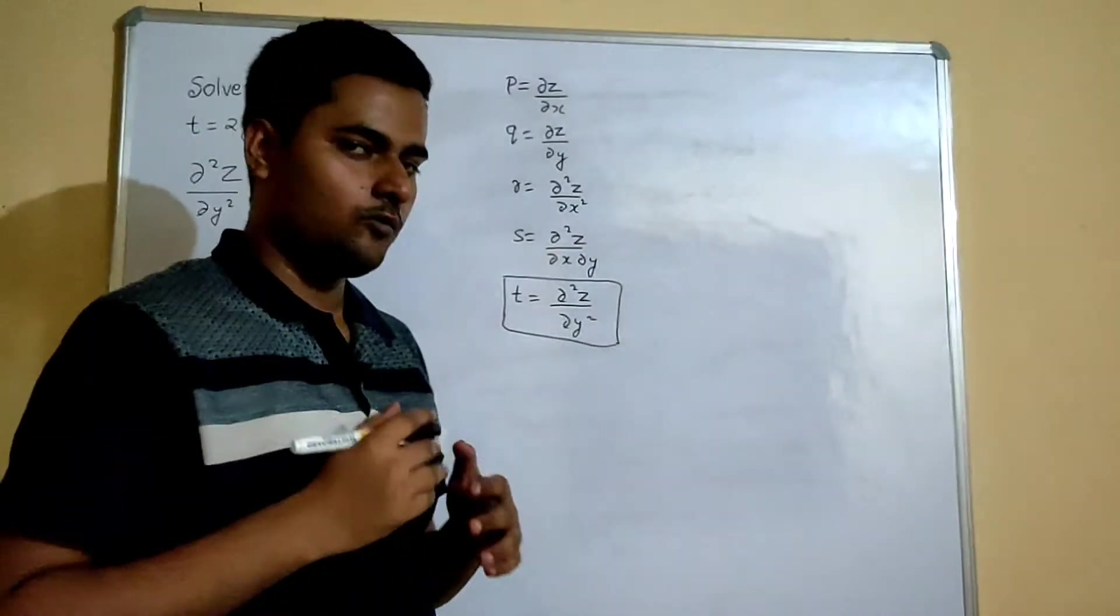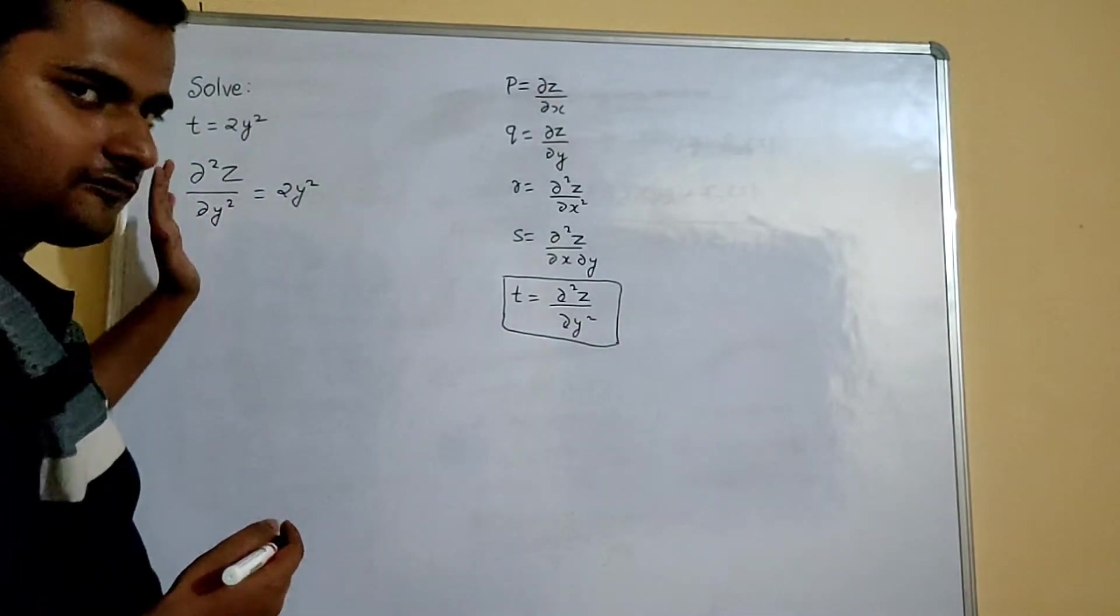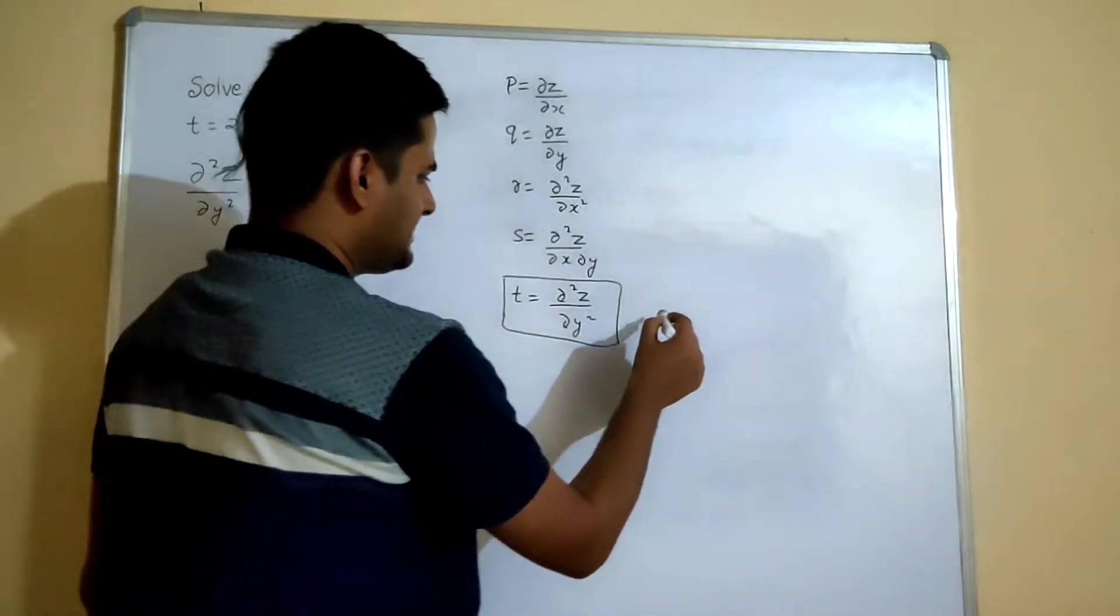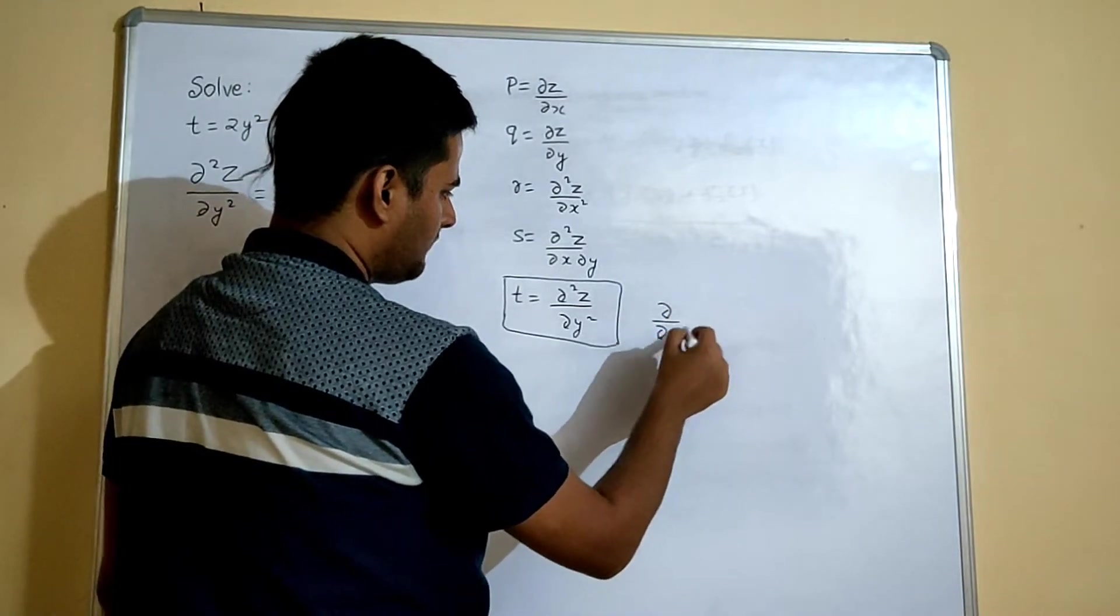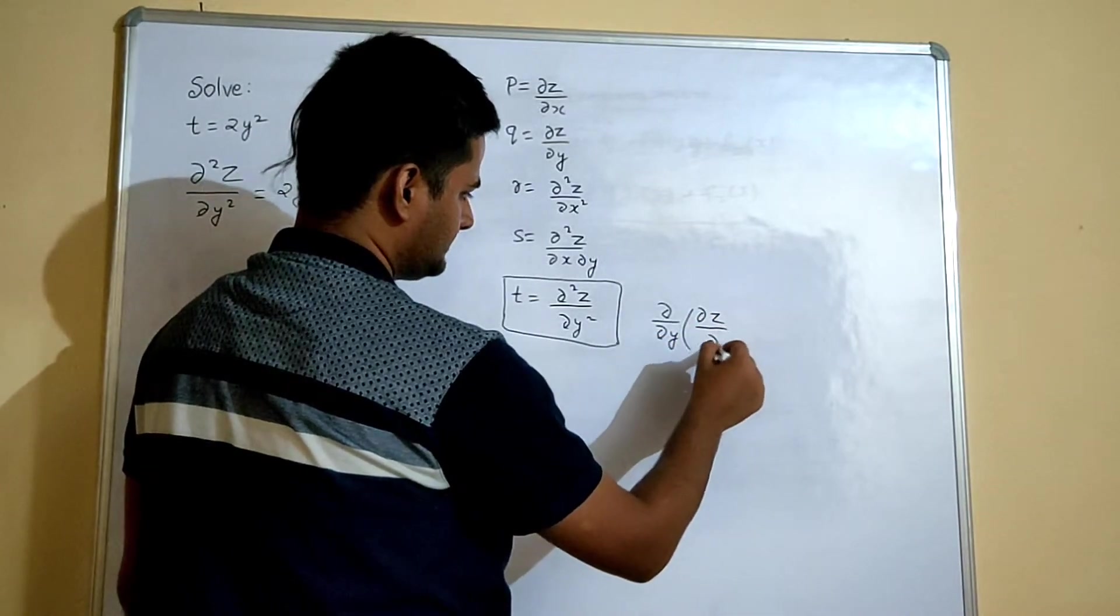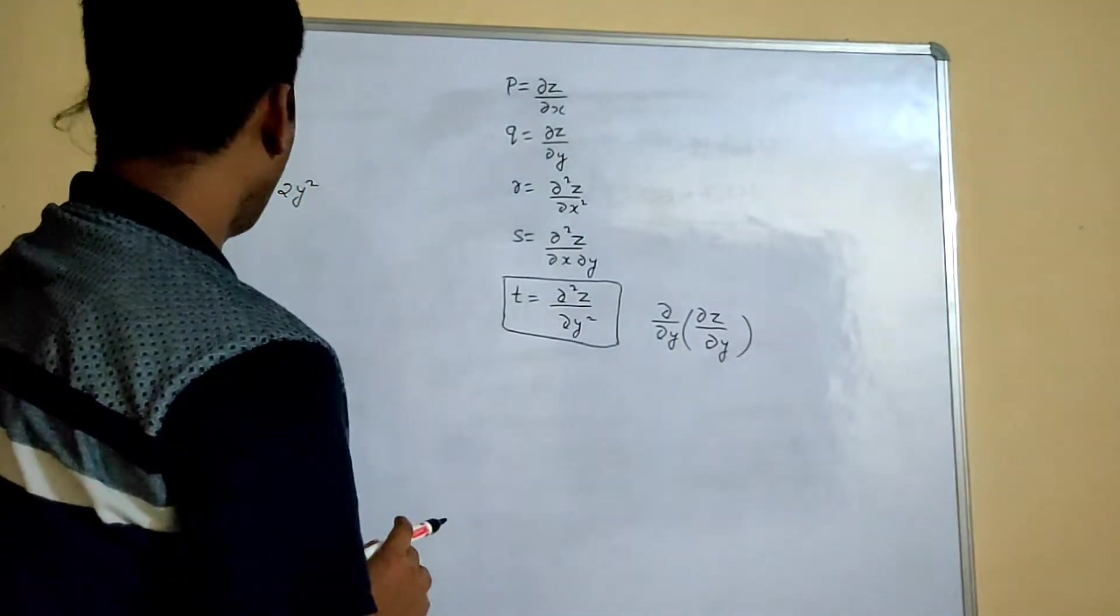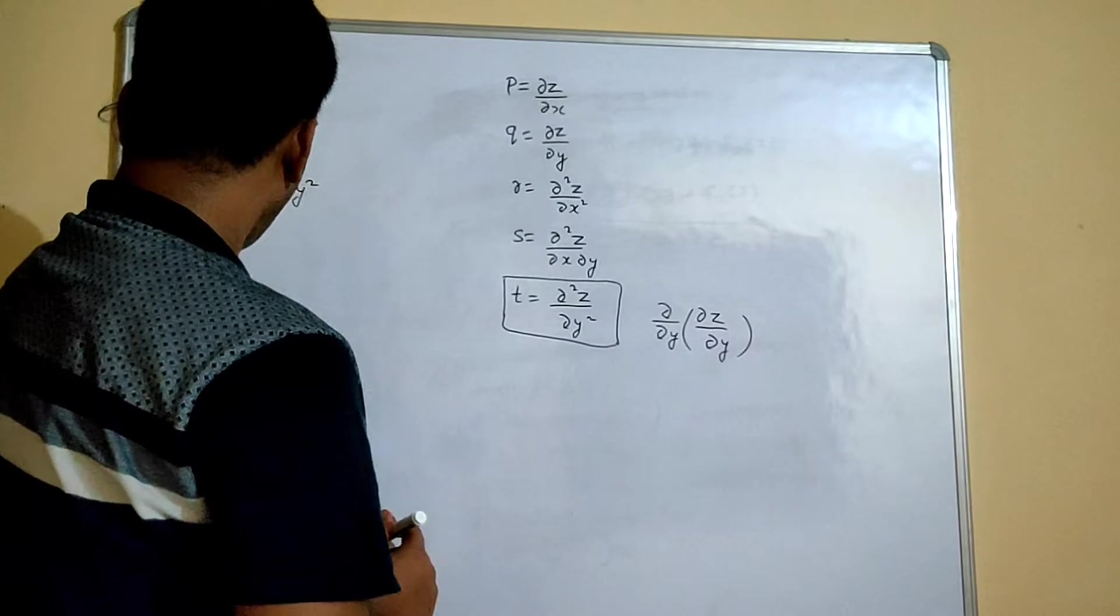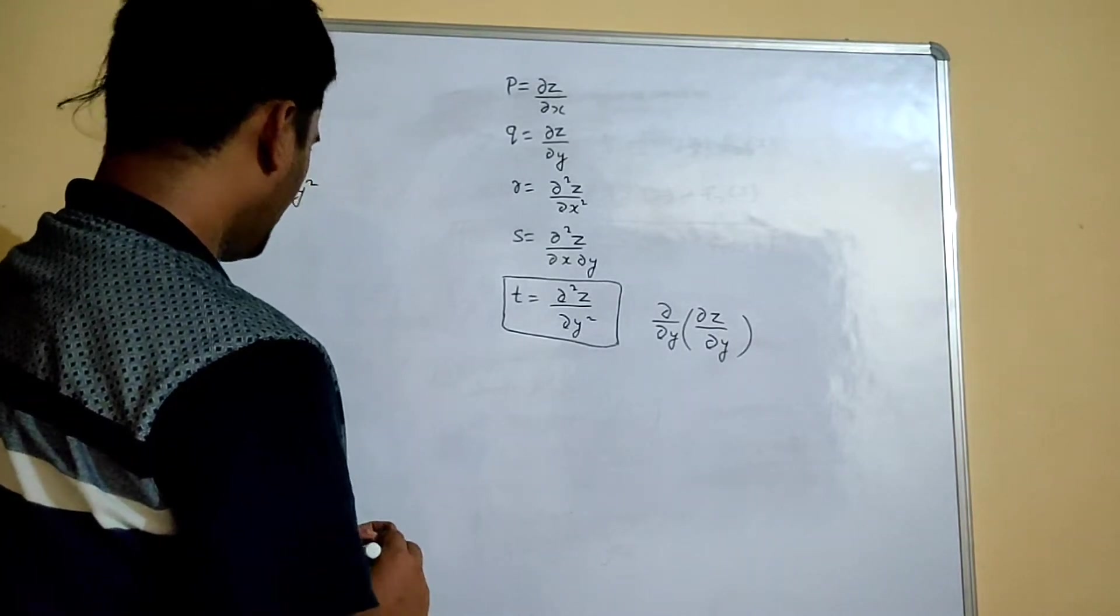Now one after one we will remove this del from the equation to finally get our z. Because this is written as del by del y of del z by del y. Because if you open this you will get del 2z by del y square.